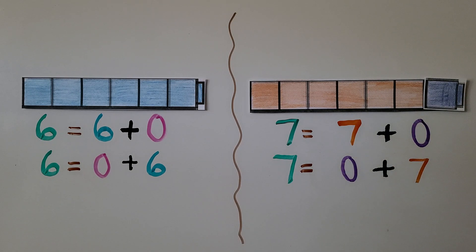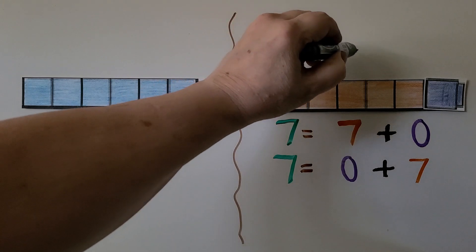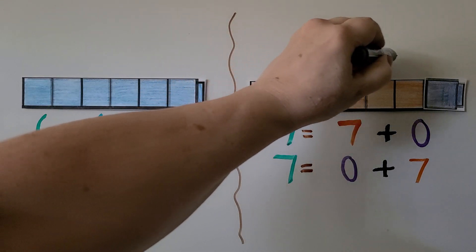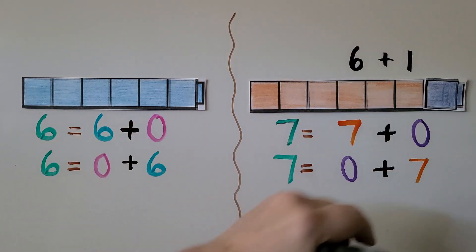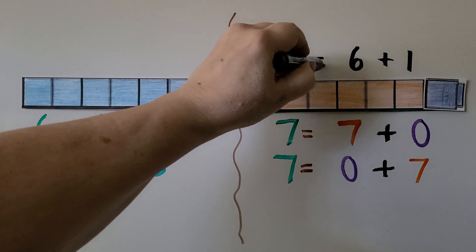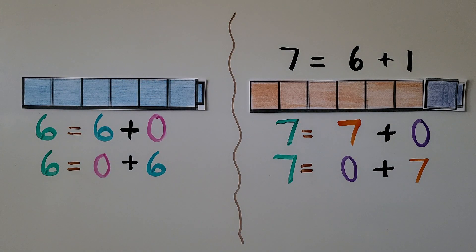Yes! There's still 7 cubes in the cube train if we change one of the cubes to a blue one. There would be 6 orange and 1 blue. We would have 6 orange plus 1 blue, and that would be equal to 7. 7 is equal to 6 plus 1.